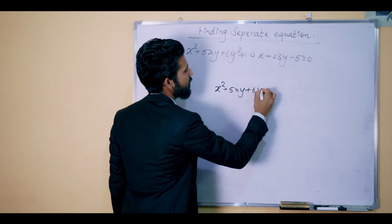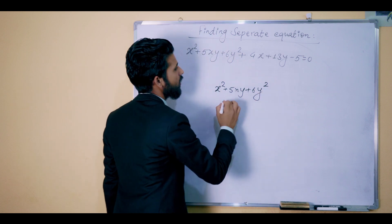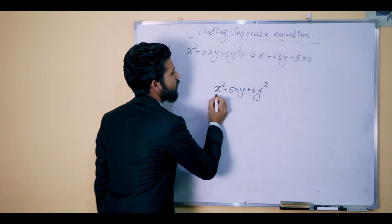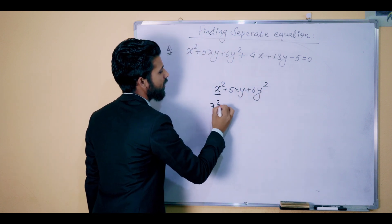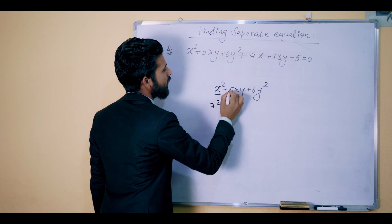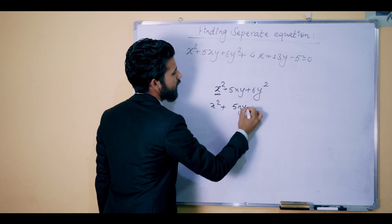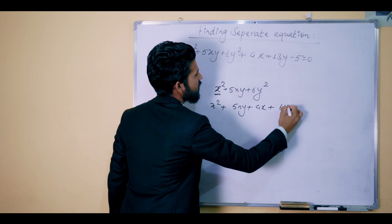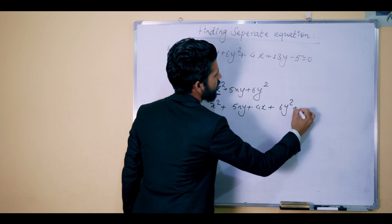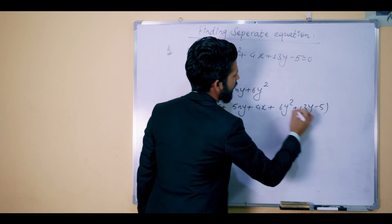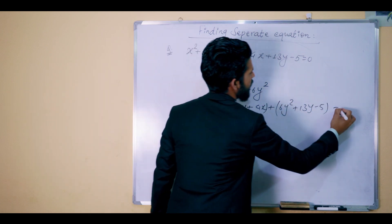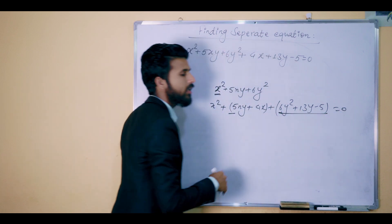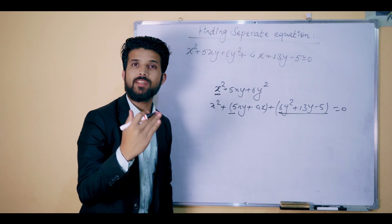You can see this: 5xy plus 6y squared, and what happens here — x squared plus 5xy plus xy and 4x and 6y squared plus 13y minus 5. We can see x commonly in the form x squared plus bx plus c, the standard quadratic equation form.